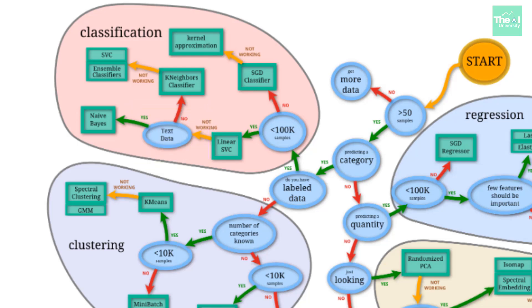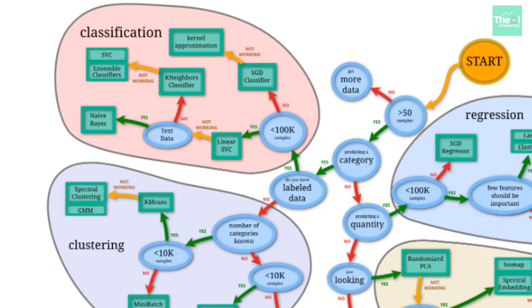If it is text data, we should opt for the Naive Bayes algorithm for classification. This algorithm is used for classifying text sentiments to perform sentiment analysis, among other applications. On the other hand, if the data is non-textual in nature, we should opt for KNN — the K-Nearest Neighbor algorithm.